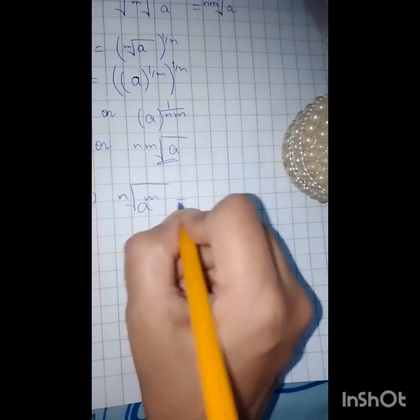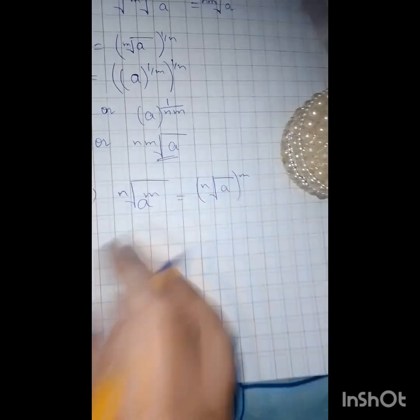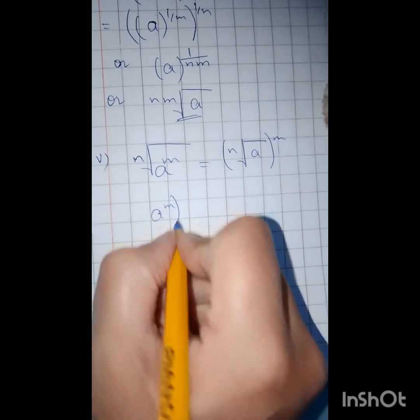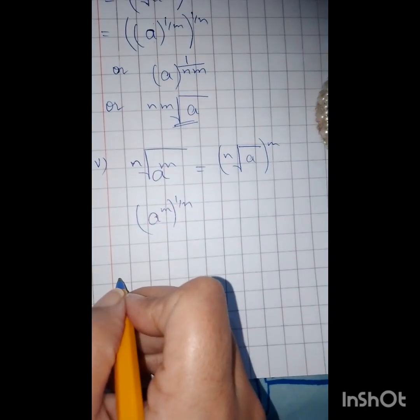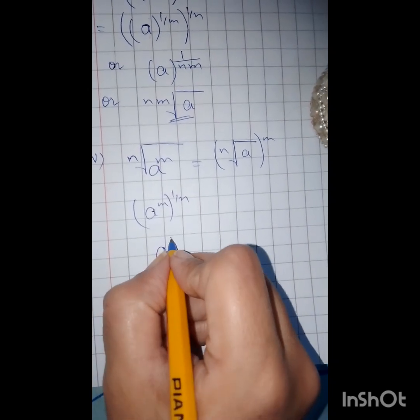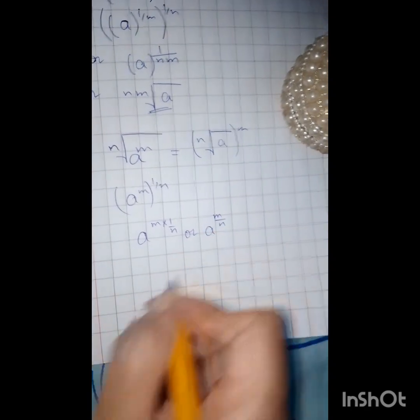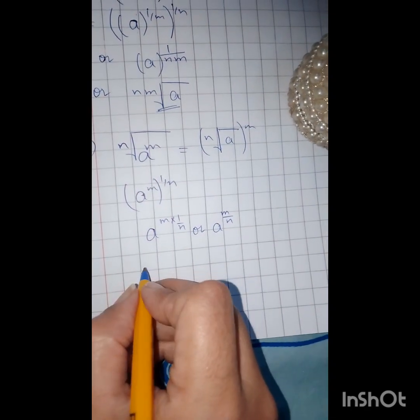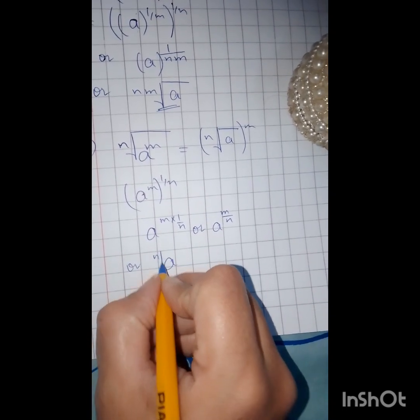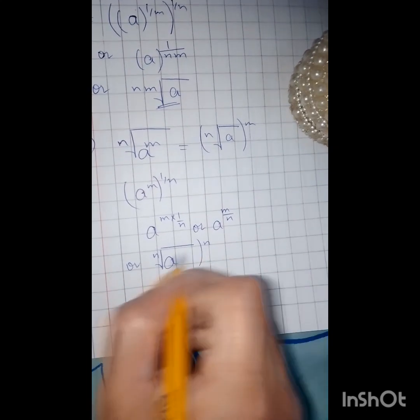n root a raised to the power m equals n root a to the power m. Let's see how to do it. n root a raised to the power m, again the same manner.